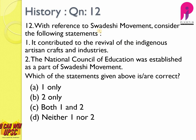Question number twelve: with reference to the Swadeshi Movement, what are the correct statements? It contributed to the revival of indigenous arts, artisan crafts, and industries — this is correct because the Swadeshi Movement was based on self-reliance or Atma Shakti. The National Council of Education was established as part of the Swadeshi Movement — also correct, as leaders wanted to establish indigenous education. Both statements are correct; the answer is C — both one and two.